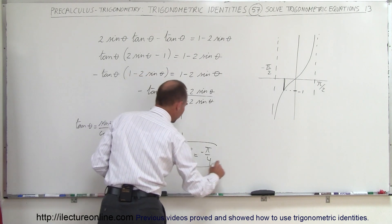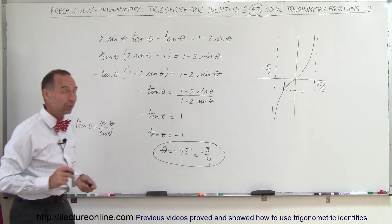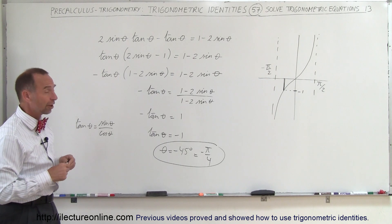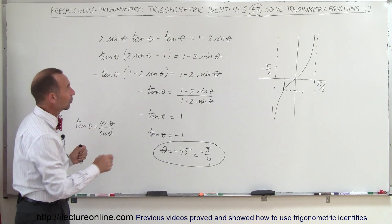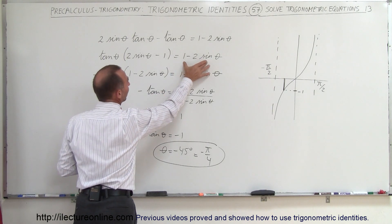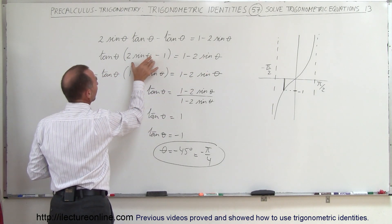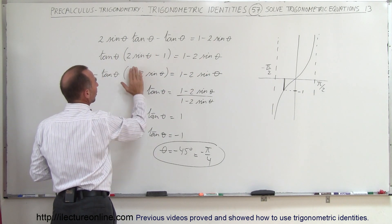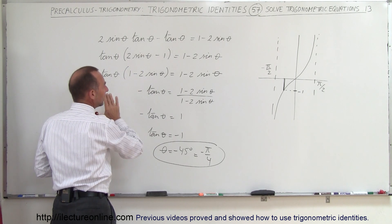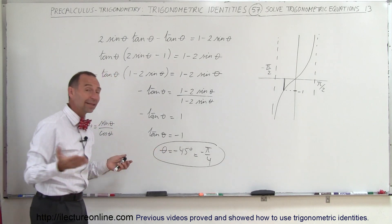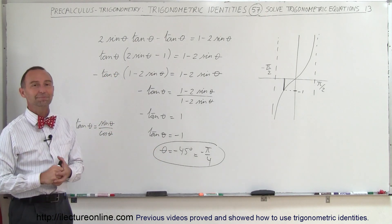So that becomes the answer to this problem. At first you take a look and think, where do I even start? If you're not sure, factor something out. But if you look at it in a clever way, you realize I have 1 minus 2 times the sine of theta. If I factor out the tangent, flip it around by getting the negative over here, and then divide both sides by that, then at that point it becomes an easy problem. That's how we do that.